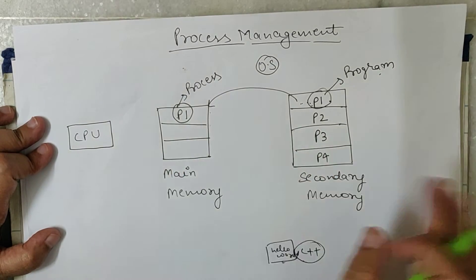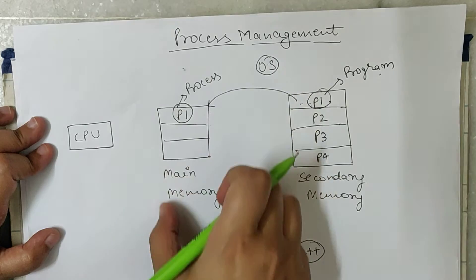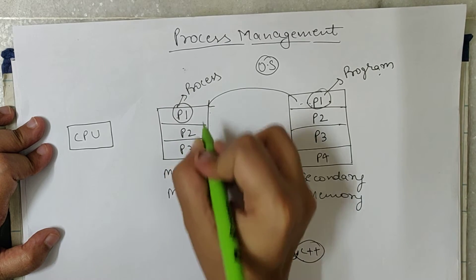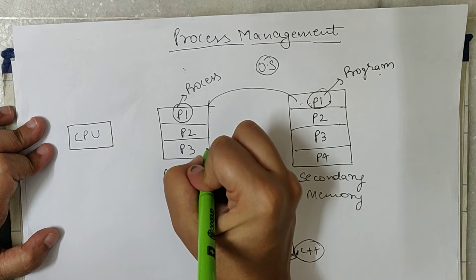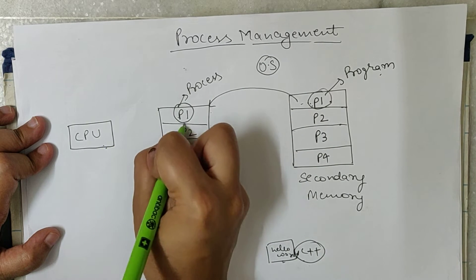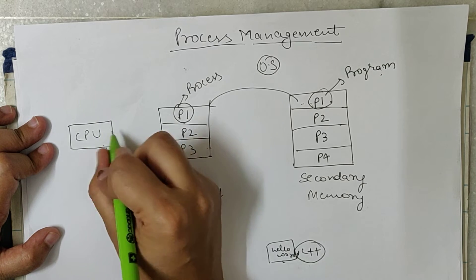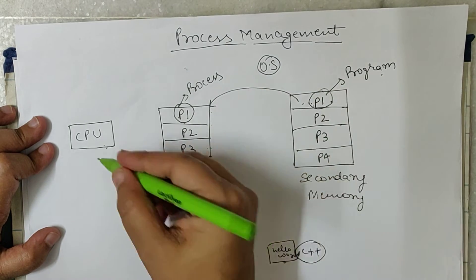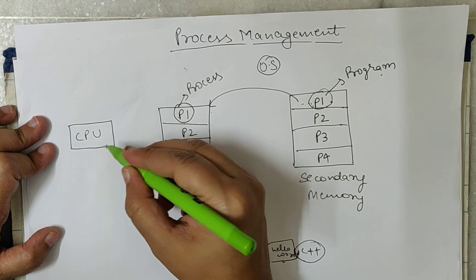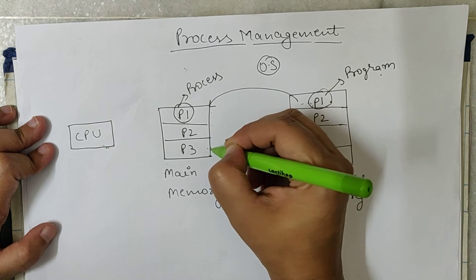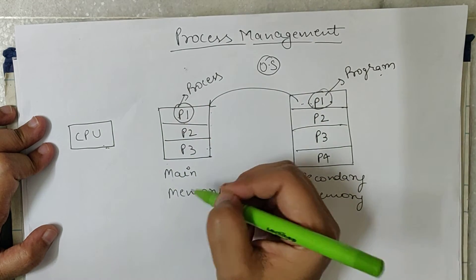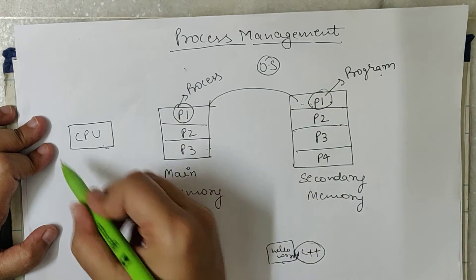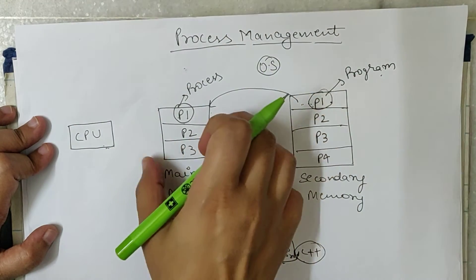The operating system manages all these processes inside the main memory. Suppose I have moved programs P2, then P3 — all these programs need to be executed by the CPU. The CPU will execute one process at a time since there is only one CPU. So all these processes are in the waiting state, ready for execution and waiting for the CPU. The operating system manages which process gets the CPU first and which gets input/output resources.